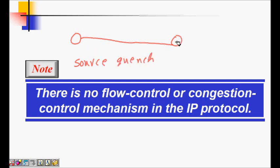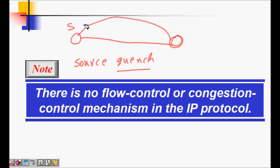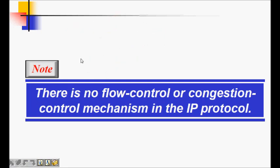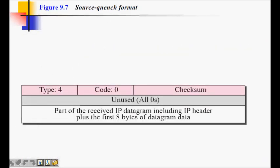Source quench works as follows: if a sender is transmitting at a very high rate and a router or receiver cannot cope with that data rate, it can send feedback to slow down. This is like students telling a teacher to slow down the lecture pace. The receiver sends a source quench ICMP message asking the sender to stop or reduce its sending rate. The type code for source quench is type 4, code 0.